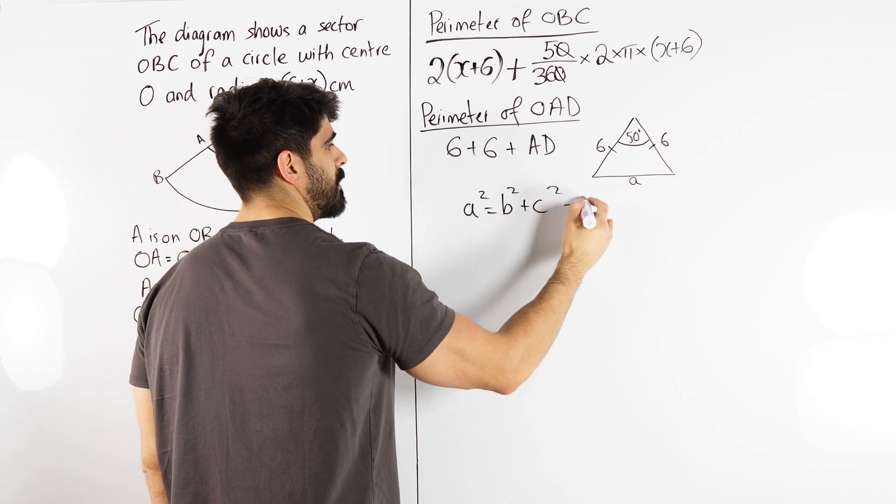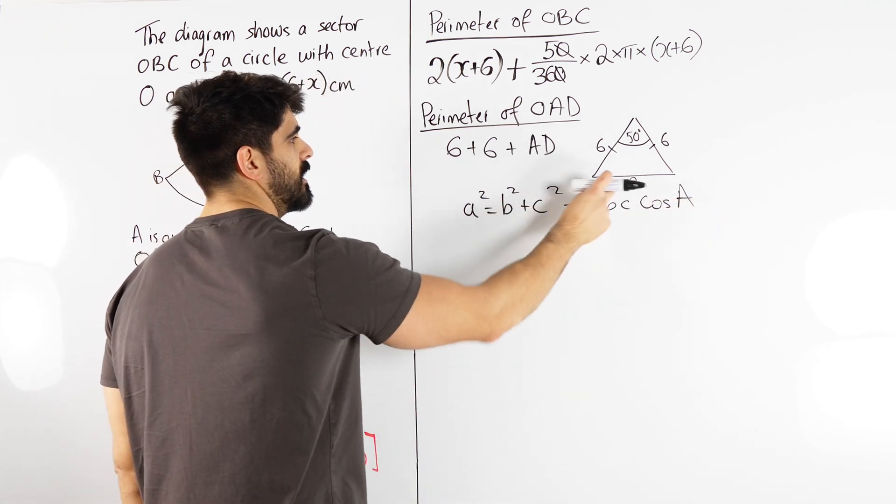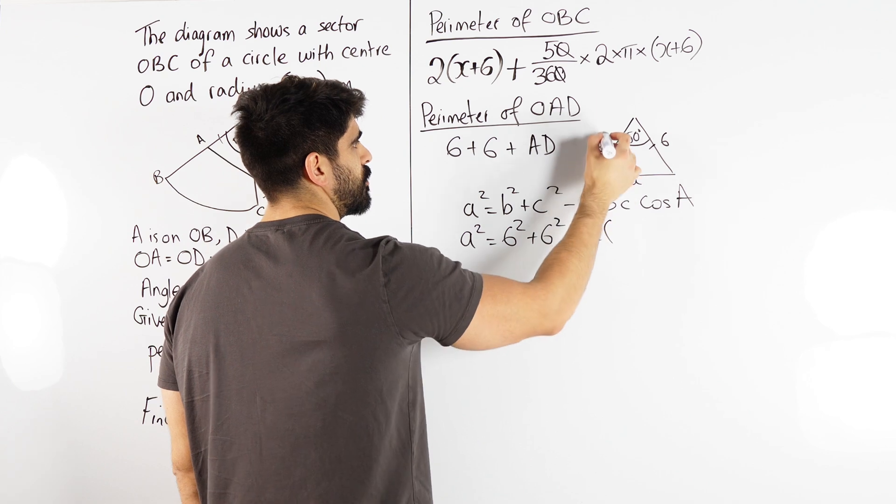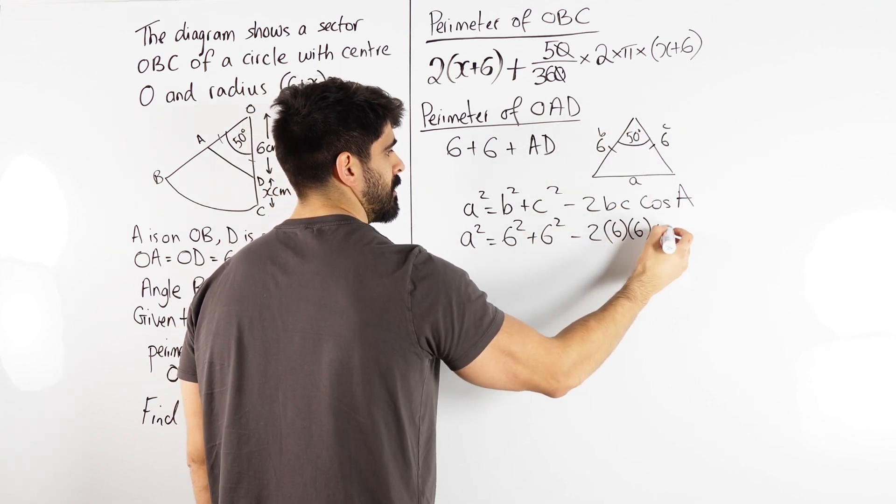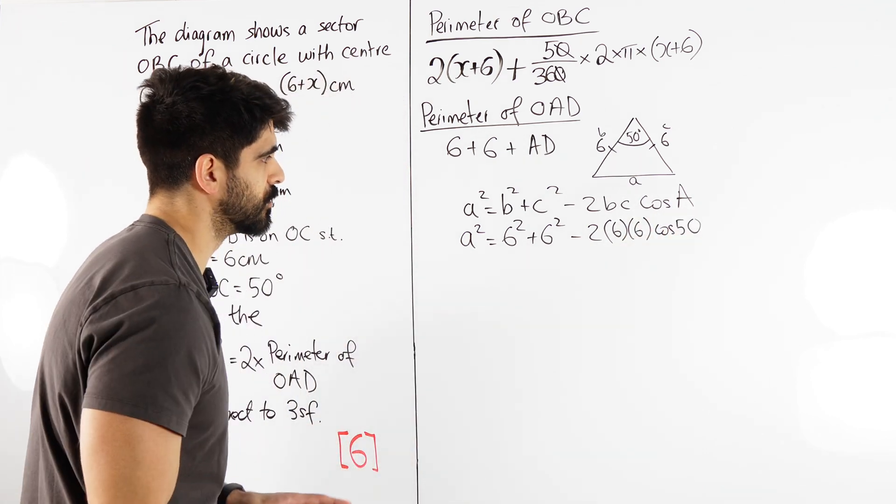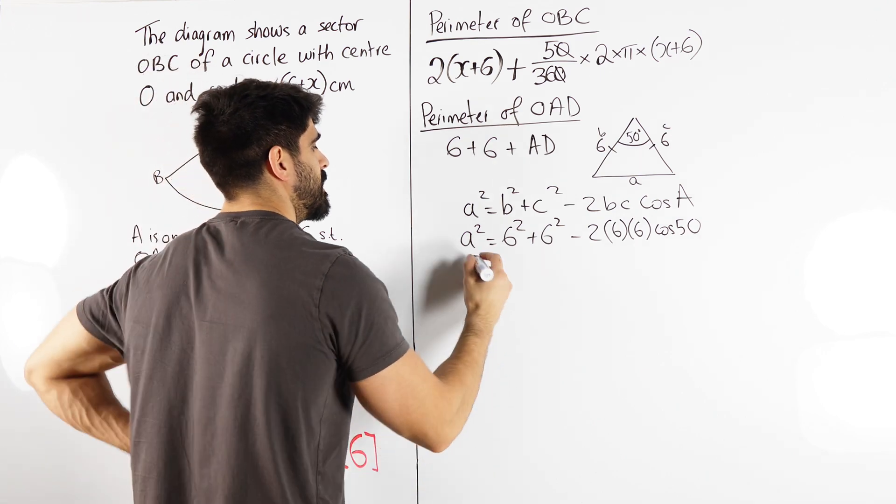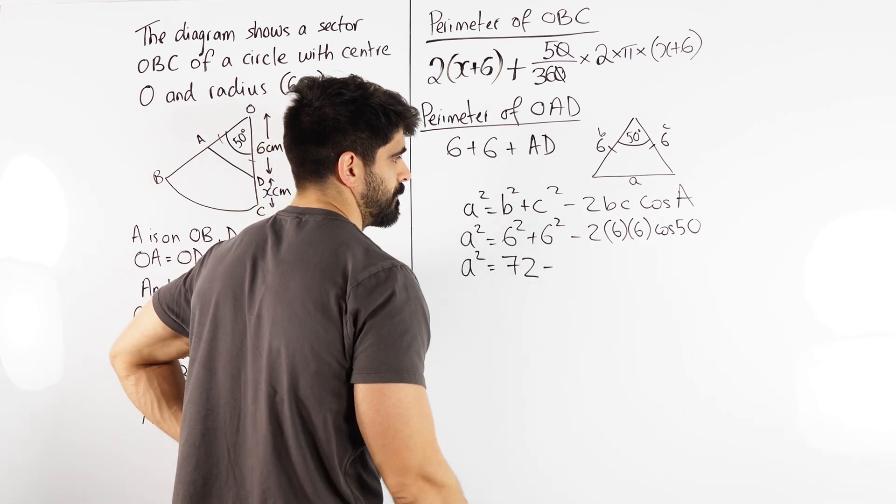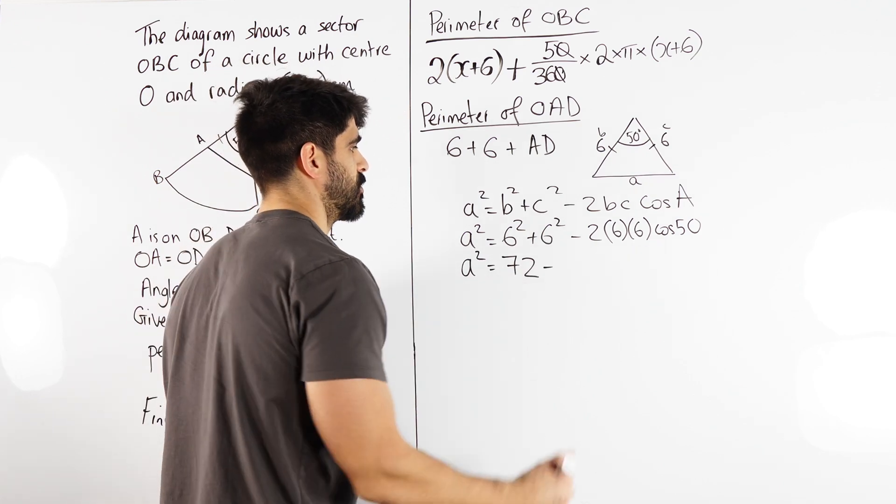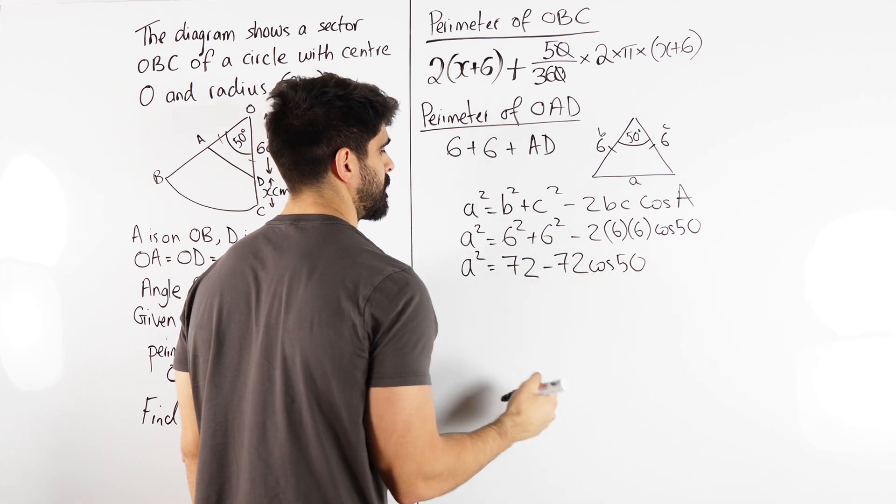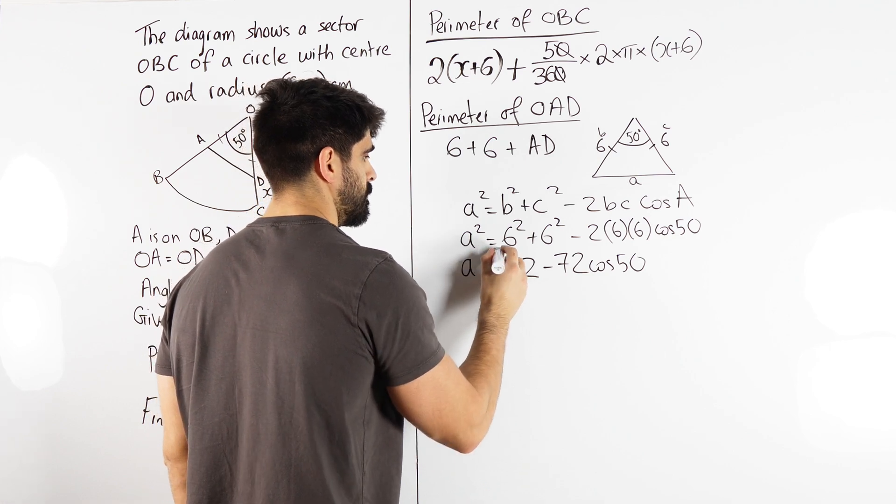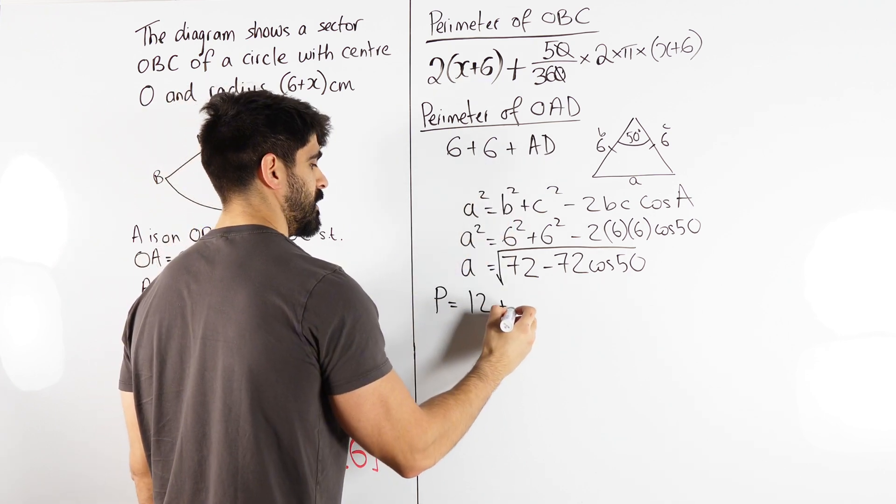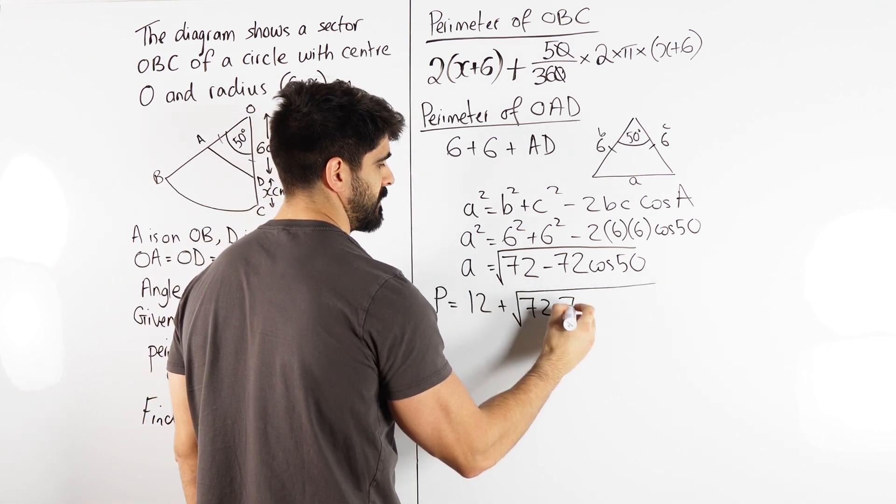What does that mean? So Pythagoras' theorem minus 2bc cos a. And I've already labelled little a. So little a squared is b squared plus c squared, 6 squared plus 6 squared minus 2 lots of your b's and c's, cosine of 50. Now as much as possible, I do not want to use my calculator. Okay, I'm talking about a squared plus c squared, is 36 plus 36, which is 72 minus 2 lots of 36. Yeah, 36 times 2 gives me 72 again. Cos 50. So A is going to be the square root of all that. And that's what's going to go there. So that perimeter is going to be 6 plus 6 which is 12 plus the root of 72 minus 72 cos 50.